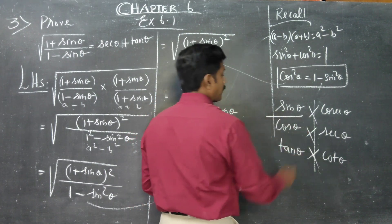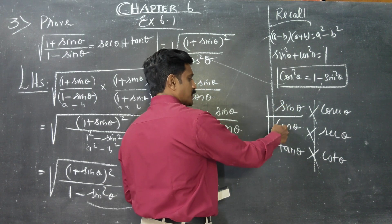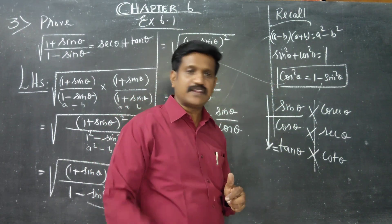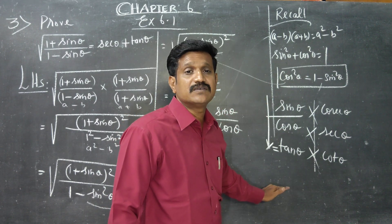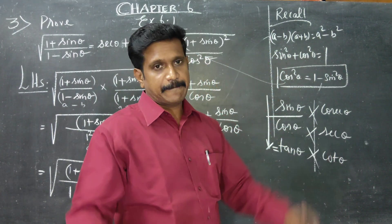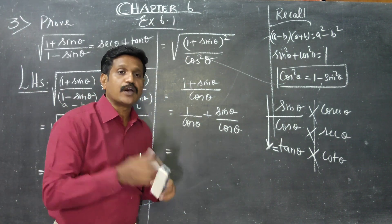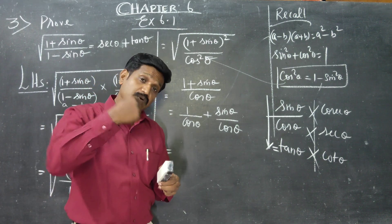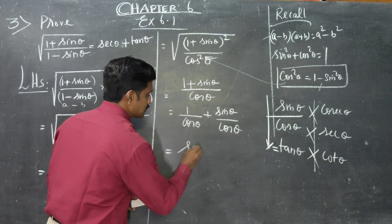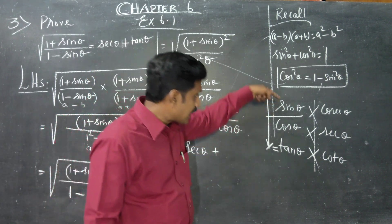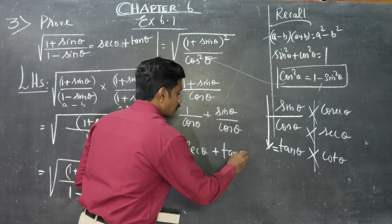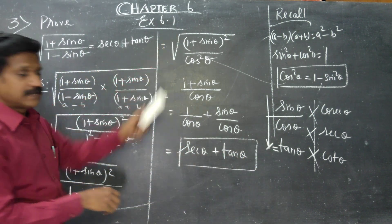Split the fraction: (1 plus sin theta) by cos theta equals 1 by cos theta plus sin theta by cos theta. Using the direct formula, sin theta by cos theta is equal to tan theta, and 1 by cos theta is sec theta. So the result is sec theta plus tan theta.